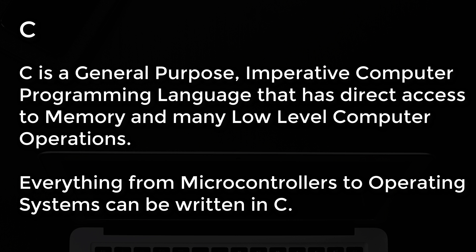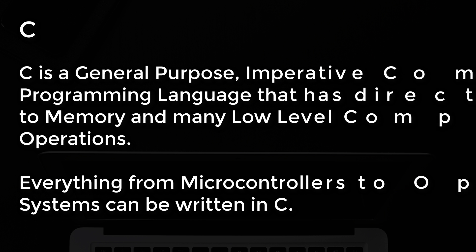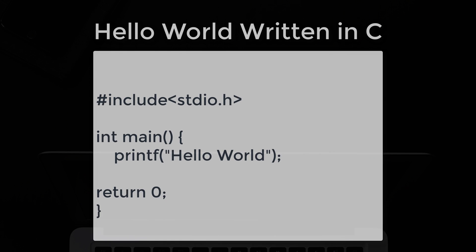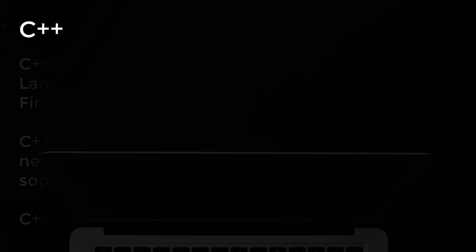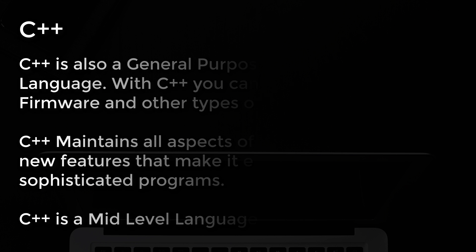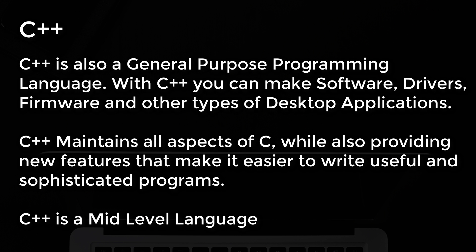Number 7: C. C is a general-purpose, imperative computer programming language that has direct access to memory and many low-level computer operations. Everything from microcontrollers to operating systems can be written in C. This is how you write hello world in C.